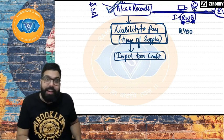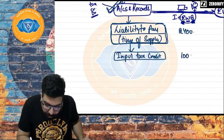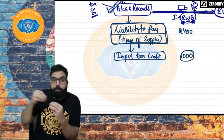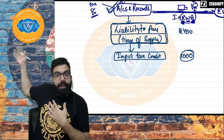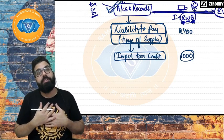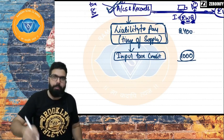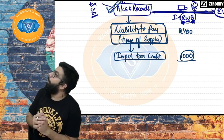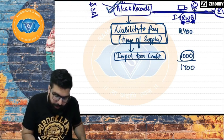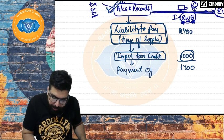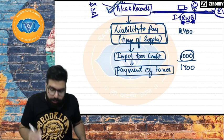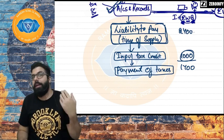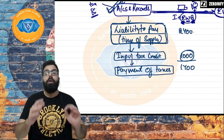Suppose I have a credit of 1,000 rupees. The government says: deduct the credit from 2,700 and pay the remaining 1,700. That remaining payment is the 'Payment of Tax' — the next chapter. I'll use net banking, debit card, or cash to make the payment to the government.